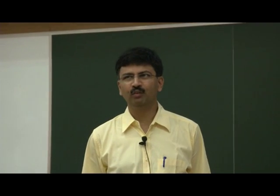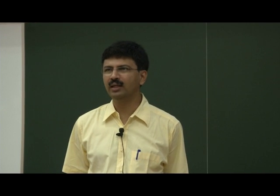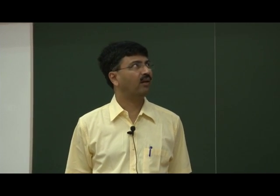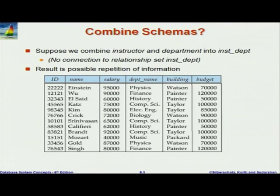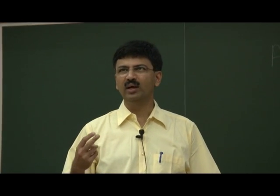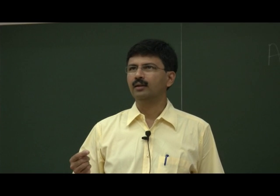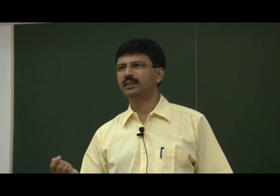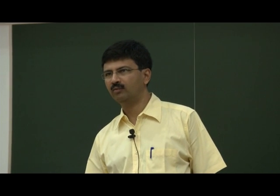Even if a department has more than one building, its budget and building have no connection with the instructor. So if there are two people in computer science — say Katz and Srinivasan — both are in the computer science department. You'll see that in these two rows, the same thing, 'Taylor' and '100,000', appears. The problem is it's redundant — the same information appears twice unnecessarily.